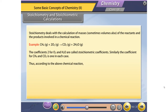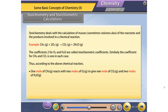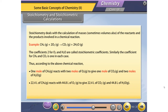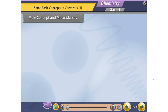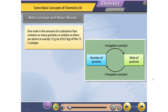According to the above chemical reaction: 22.4 liters of CH4 reacts with 44.8 liters of O2 to give 22.4 liters of CO2 and 44.8 liters of H2O. In mass terms, 16 grams of CH4 reacts with 64 grams of O2 to give 44 grams of CO2 and 36 grams of H2O.